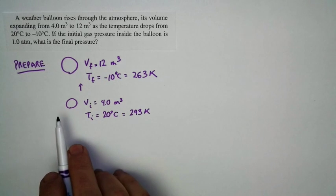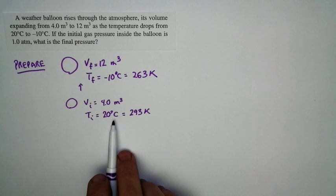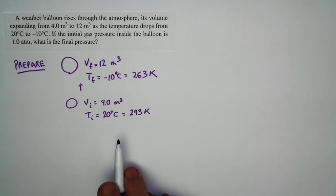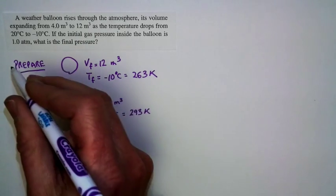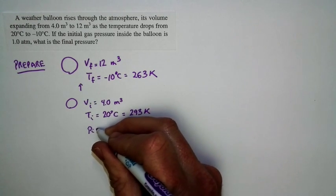So this is the setup. The balloon rises from here to here. As it rises, the volume increases. The temperature decreases. We know the initial pressure. The initial pressure is 1.0 atmospheres.